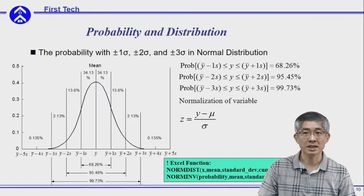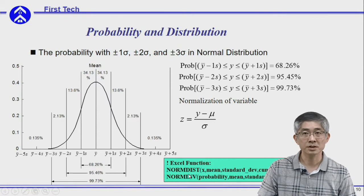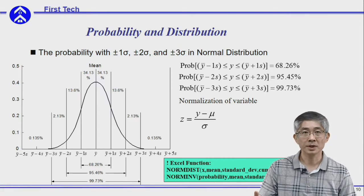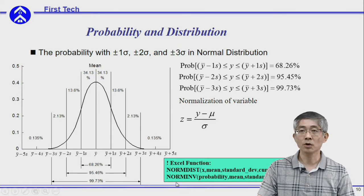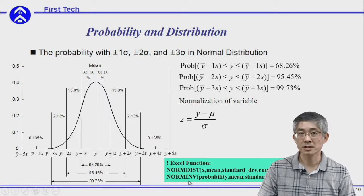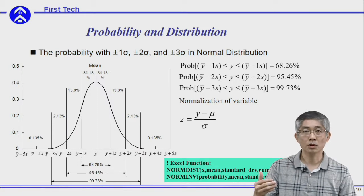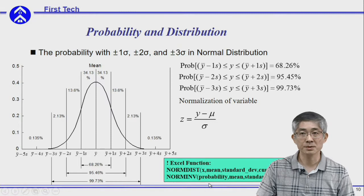This is the Excel function NORMDIST, which you can use to calculate the cumulative probability. There is also NORM.INV — you can use this command to find the value of x for which the corresponding cumulative probability equals the number you specify.